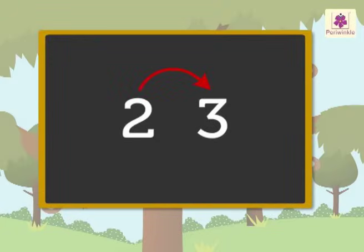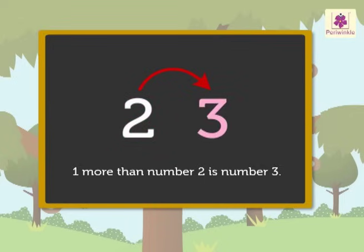When we count one forward from a number, we get one more than that number. One more than number two is number three.